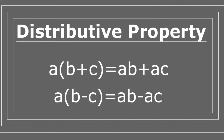In summary, the distributive property states that if I have a number or variable being multiplied by the addition of two other numbers or variables, I can distribute — in this case a — among the terms inside the parenthesis. If I have a multiplied by b plus c, that equals a times b plus a times c. If one of the terms is negative or is being subtracted, then it becomes a times b minus a times c.